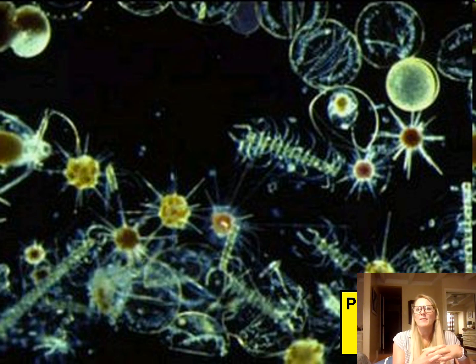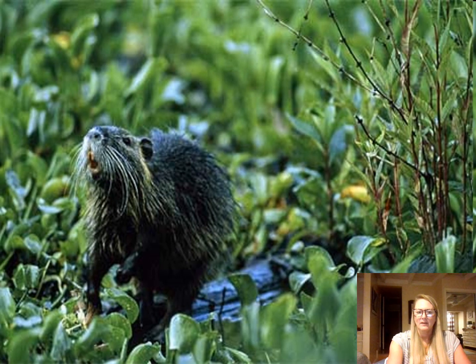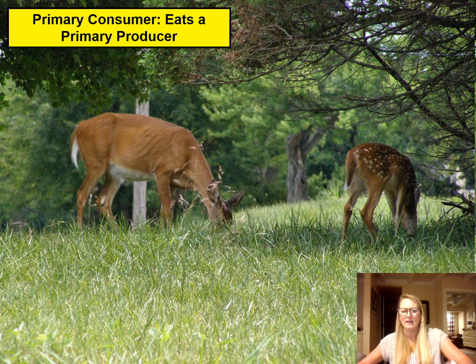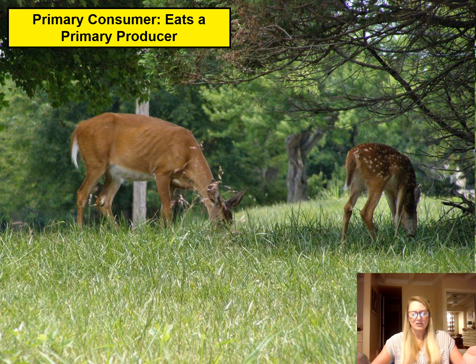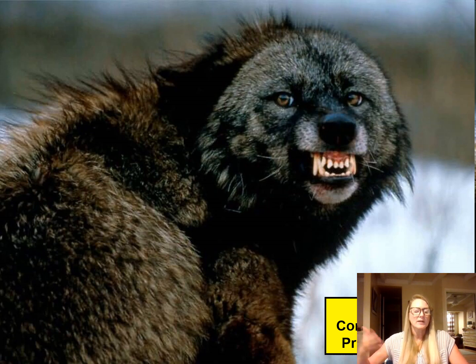Here is a picture of phytoplankton — they're microscopic, floating around in waterways and the ocean, taking sunlight and converting it into sugar. Any organism that eats a primary producer is called a primary consumer. These deer, for example, are grazing and eating vegetation on the ground, so they're classified as primary consumers. Anything that eats a primary consumer is called a secondary consumer — so if this wolf came along and ate the deer, it would be classified as a secondary consumer.